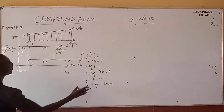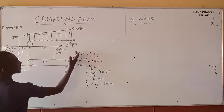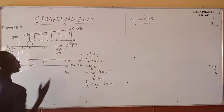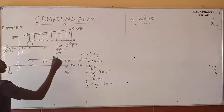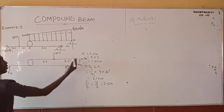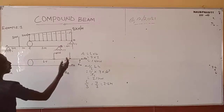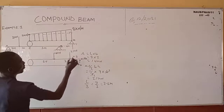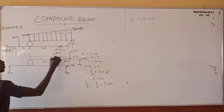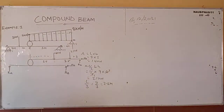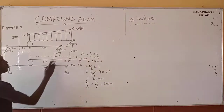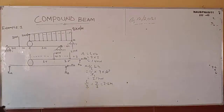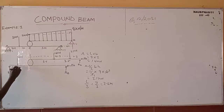The 21 kN load is acting at 2.3 meters away from the 90-degree end, so from the other end the distance is 7 minus 2.3, which equals 4.7 meters. The 3 kN point load is acting at its position, with 3 meters on one side and 1 meter to point C. The internal hinge is at point C.